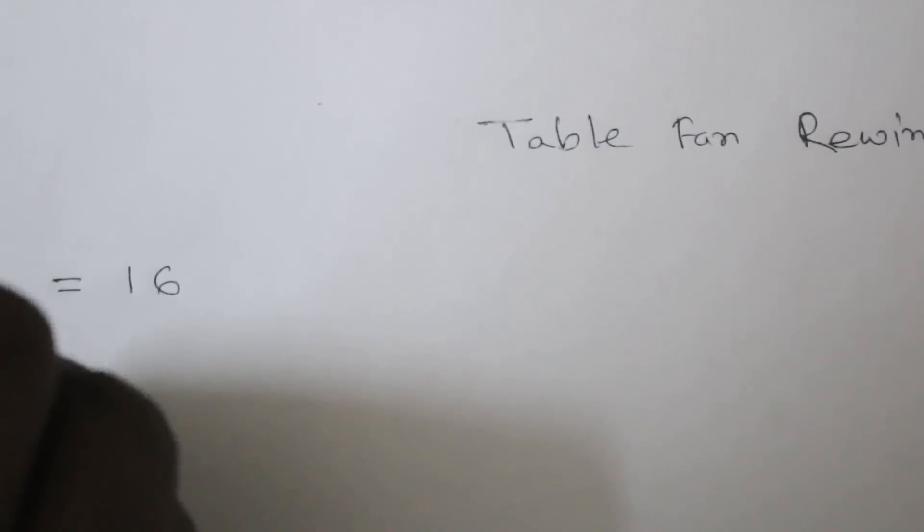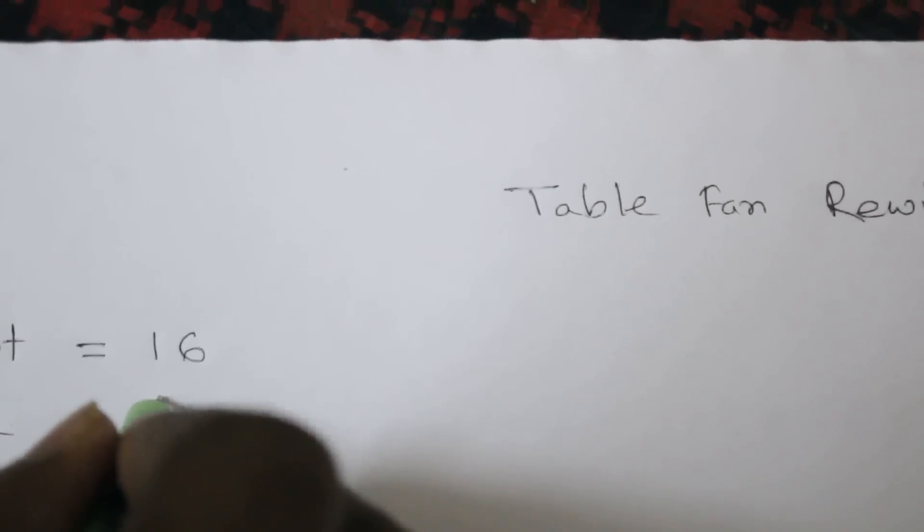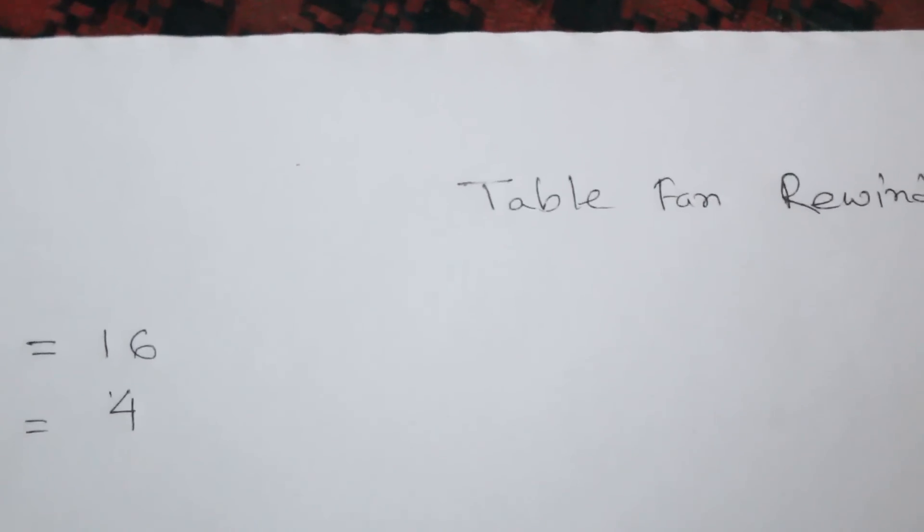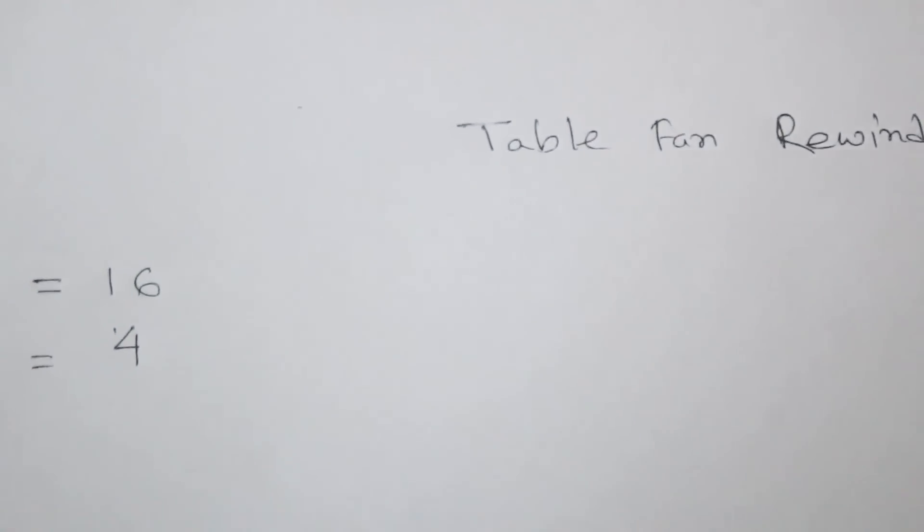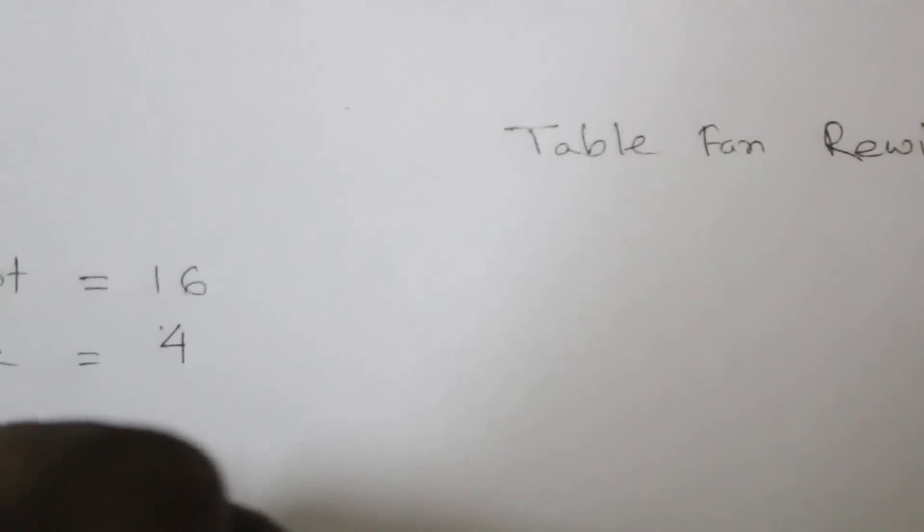So pole - pole always 4. Table fan always 4-4, so table fan speed is 1500 rpm per minute, revolution per minute.